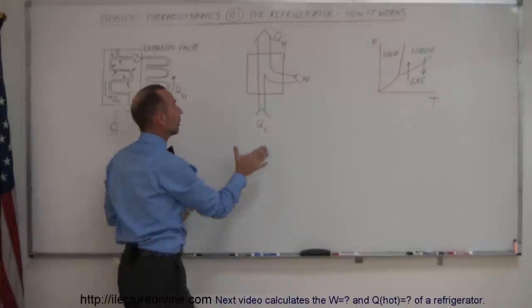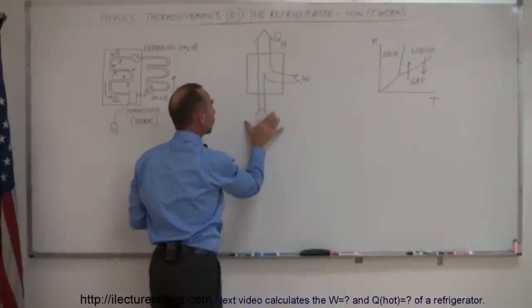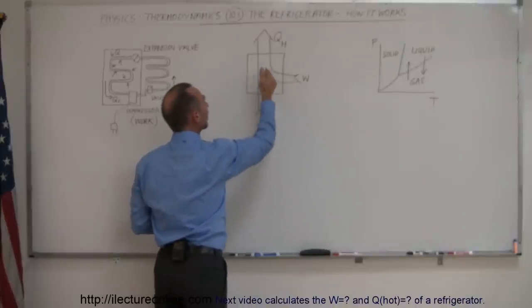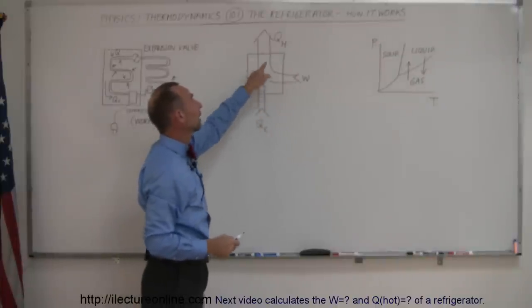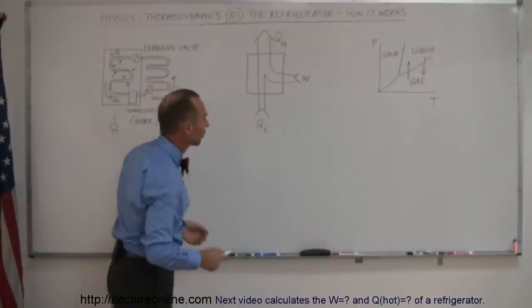So, the schematic diagram for that is: we extract heat from the cold reservoir by doing work, and then we expel heat into the hot reservoir. And of course, the work that we use to do that then also turns into heat.